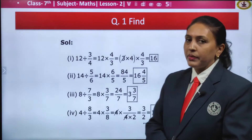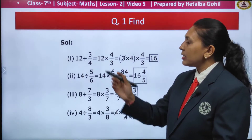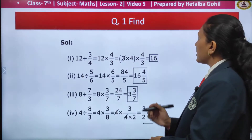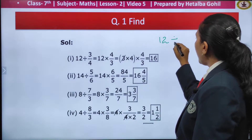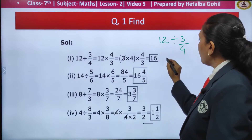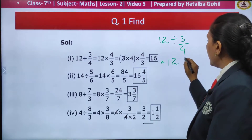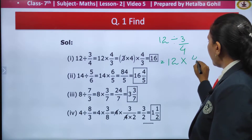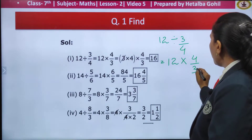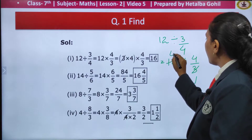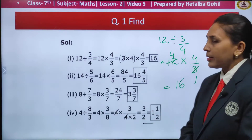We will use the same concept in our next exercise with question number 1. Find — that means we have to divide and find the answers. The first one given to us is 12 divided by 3 by 4. The solution: 12 remains unchanged, change the sign and the second number flip it — it will become 4 by 3. You can cut the numbers; multiply numerators 4 into 4, you get your answer as 16.